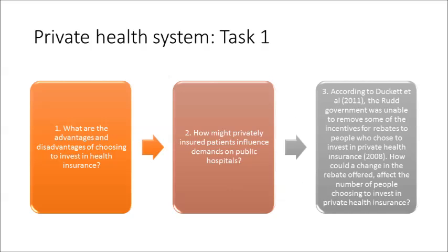Now that you've familiarised yourself with the public health system and completed the three tasks related to it, we're going to think about the opposite — the private health system. Health insurance provides Australians with additional funding for their choice of healthcare provision in addition to the public health system. It is a choice made to enable people to have greater flexibility for their decisions of when, where, and by whom their hospital and medical services will be delivered.